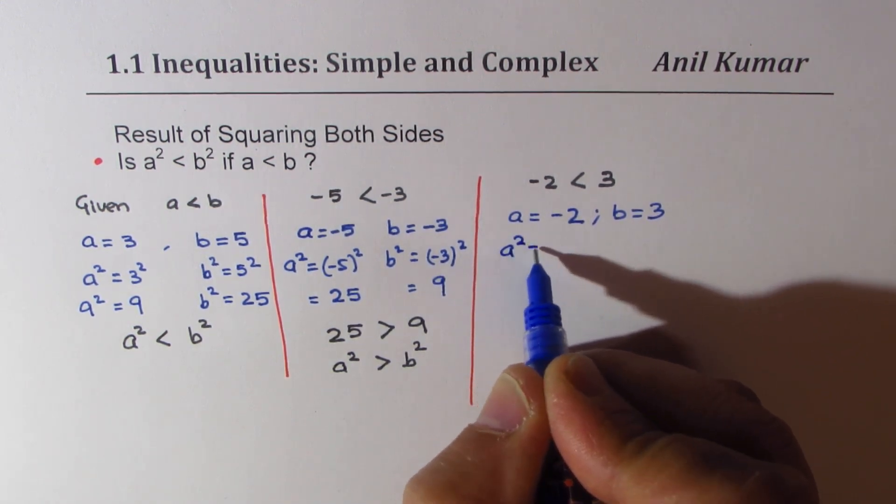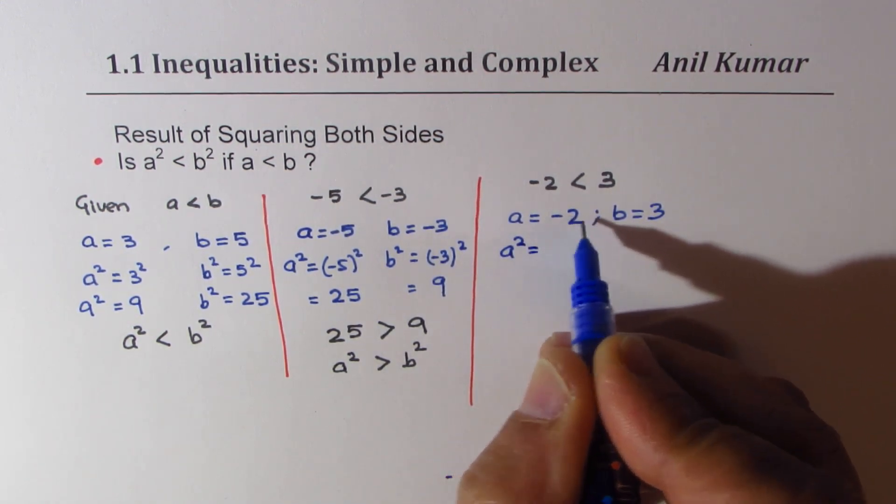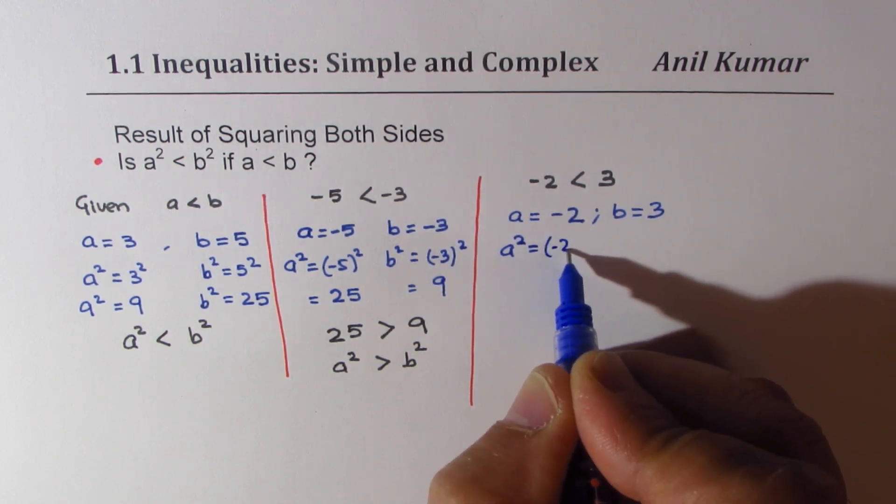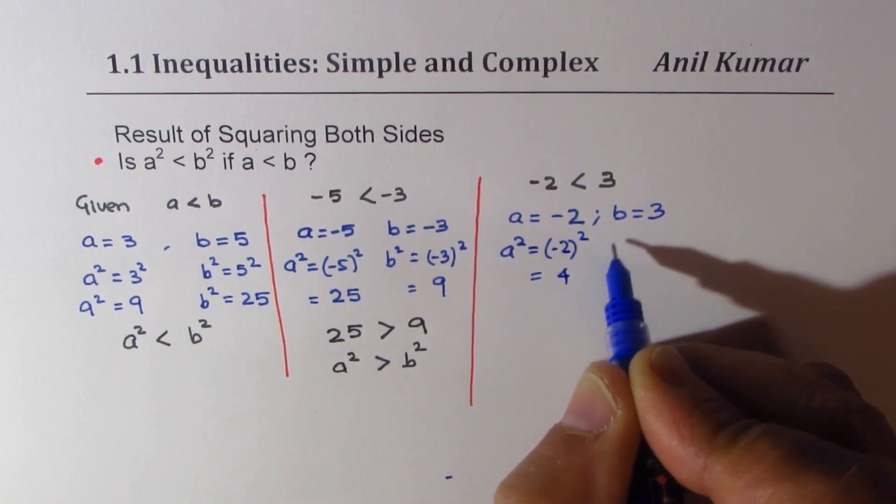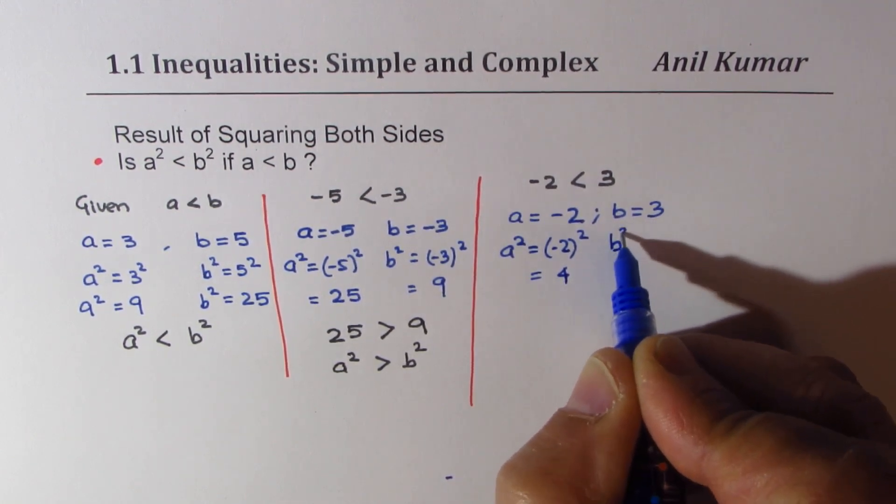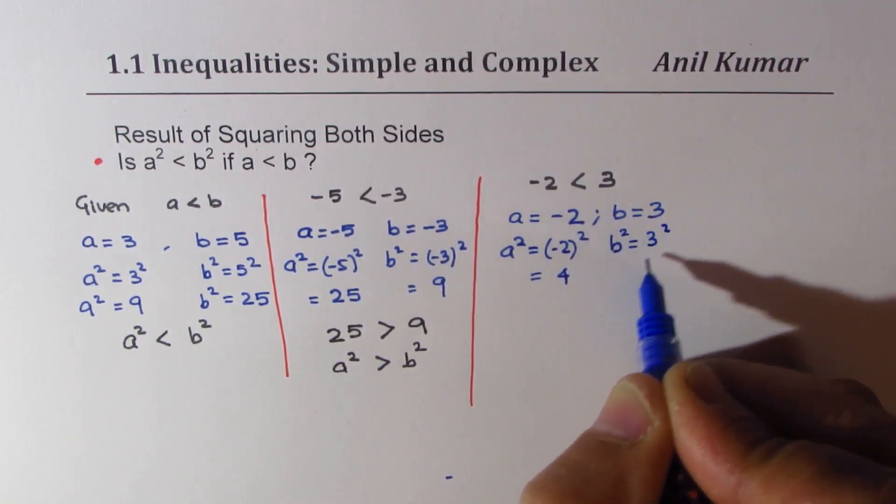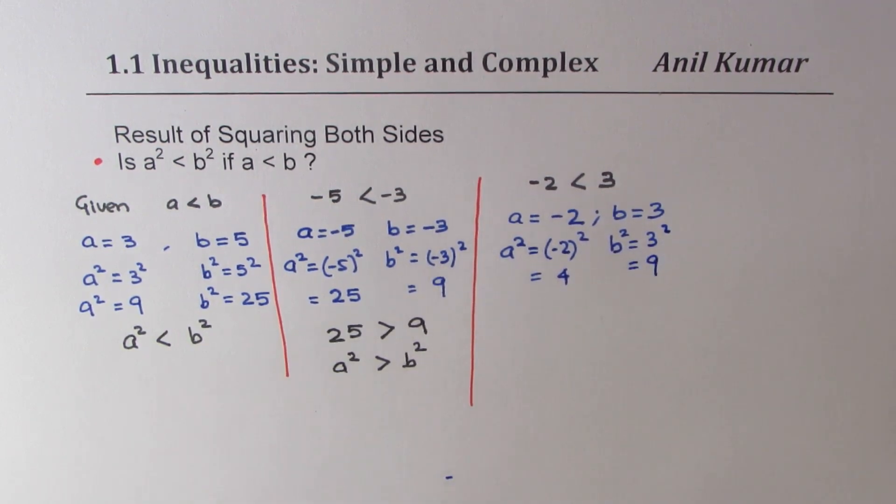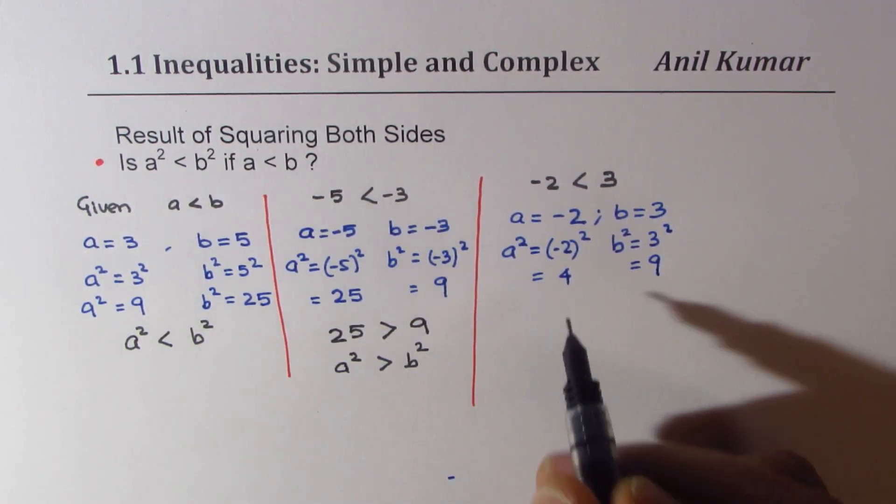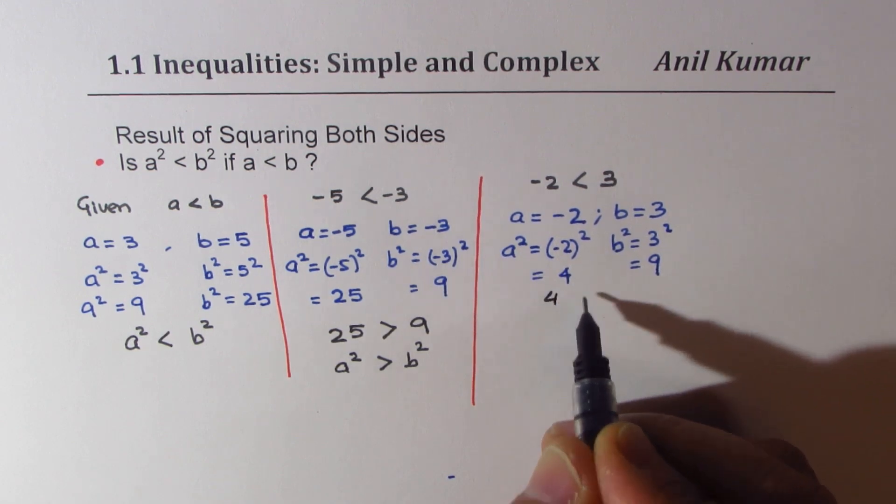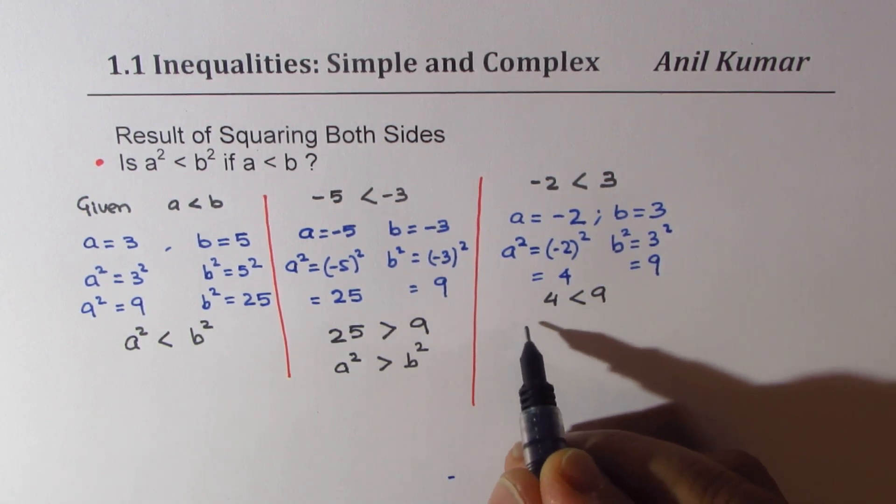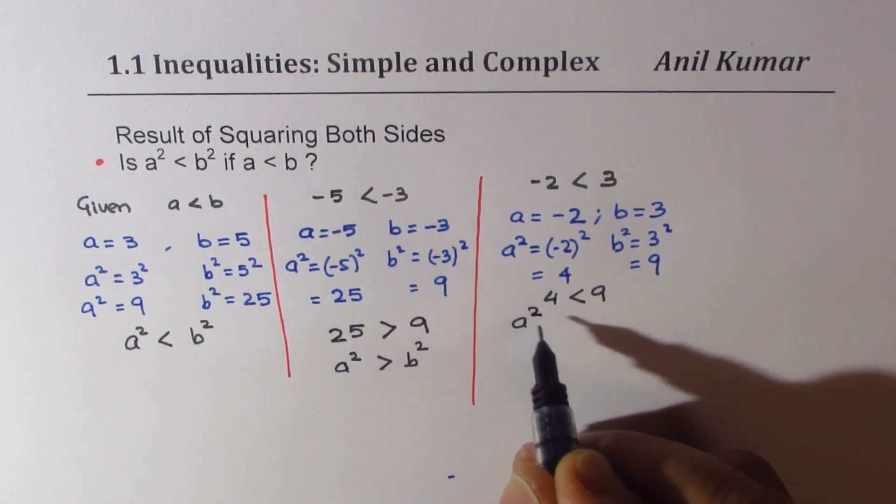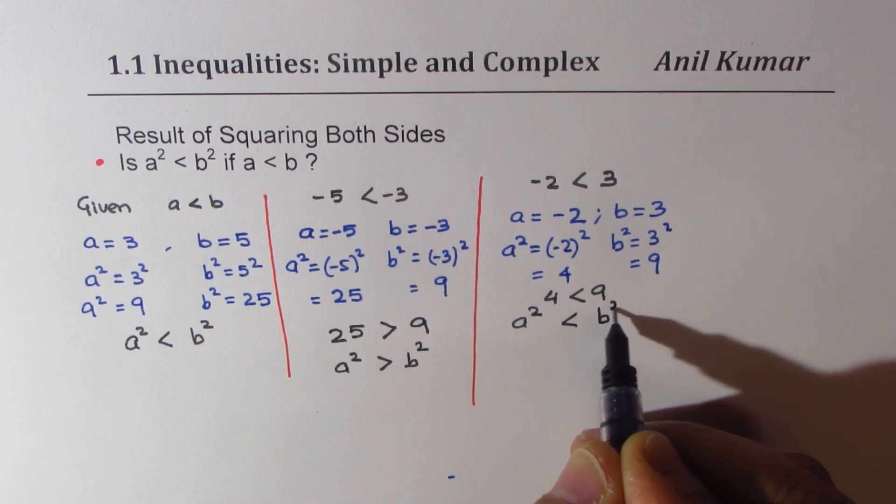I get (-2)², which is equal to 4. And if I square b, I get 3², which is 9. Well, we know 4 < 9. So, what we conclude in this particular case is that a² < b².